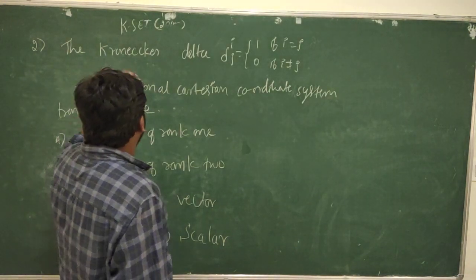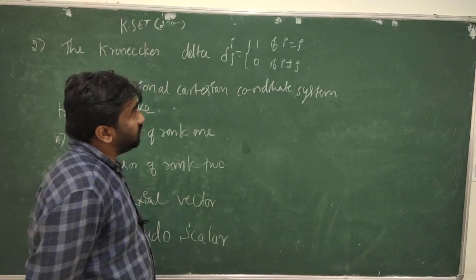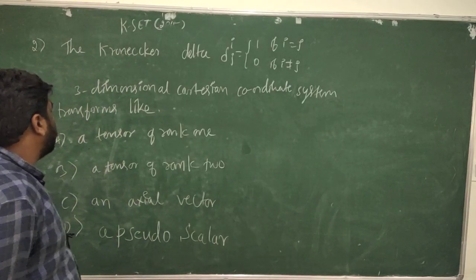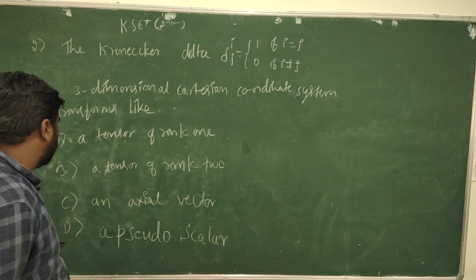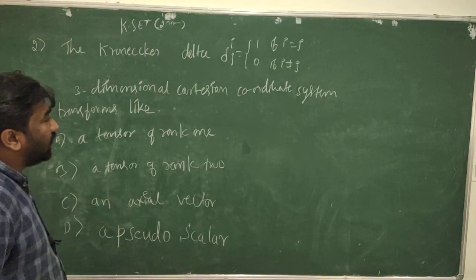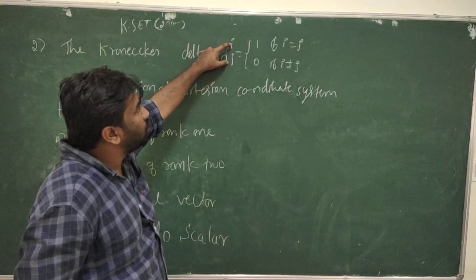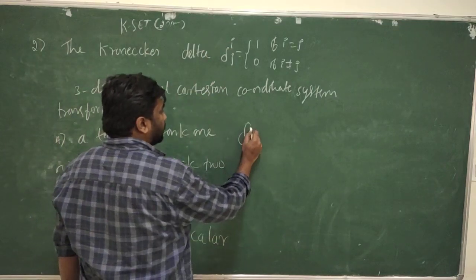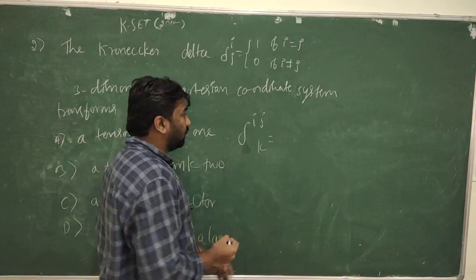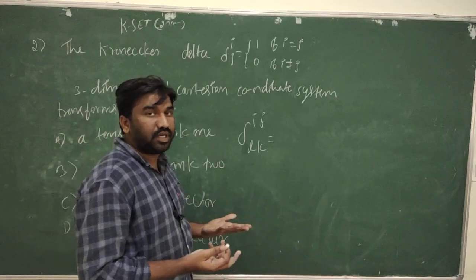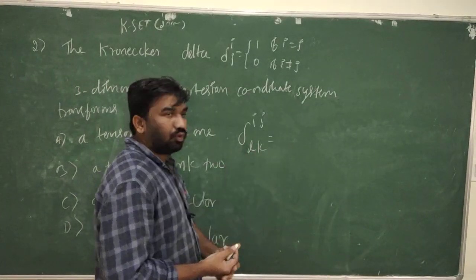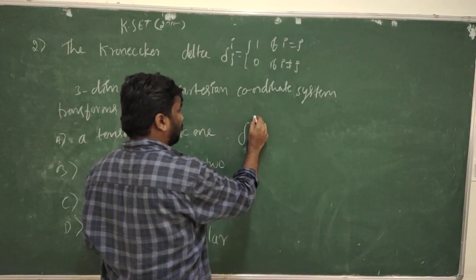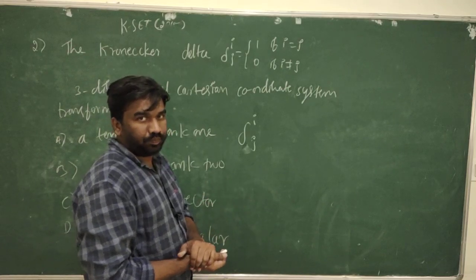The Kronecker delta δij equals 1 if i = j, and 0 if i ≠ j, in a three-dimensional Cartesian coordinate system. It transforms like a tensor of rank 2, because it has two indices i and j. If it had three indices i, j, k, it would be a tensor of rank 3. With two indices, it is a rank-2 mixed tensor.